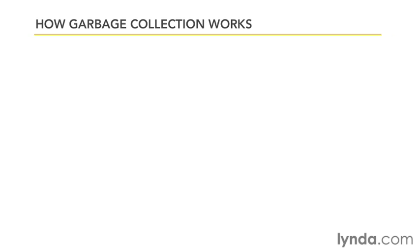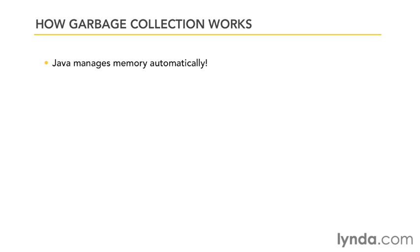One of the great charms of the Java programming language is that even though it's a compiled language, it manages memory for you. Unlike languages like C, C++, Pascal, and others, you as the programmer don't have to explicitly allocate and deallocate memory whenever you create an object.